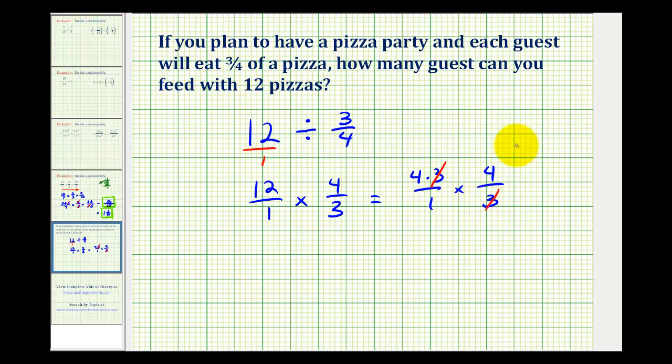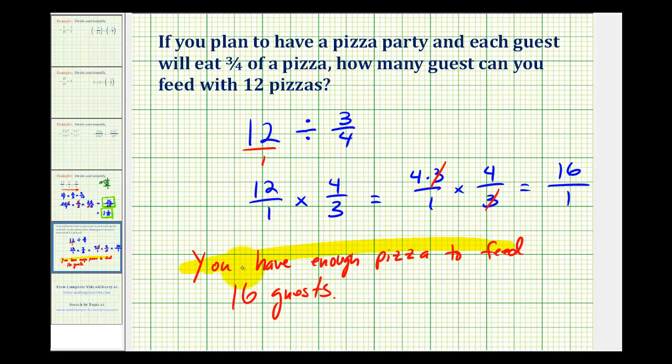So we have four times four, which is equal to sixteen. Our denominator is one, and sixteen over one is equal to sixteen. So you have enough pizza to feed sixteen guests. I hope you found this helpful.